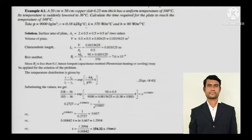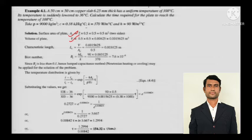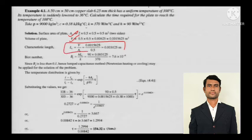The specific heat, thermal conductivity, and H are given in the numerical. The surface area of the plate you can definitely calculate. Volume of the plate you can also calculate as the dimensions are given to you. The characteristic length, as I have already told you, is volume upon the area. So this is the characteristic length.